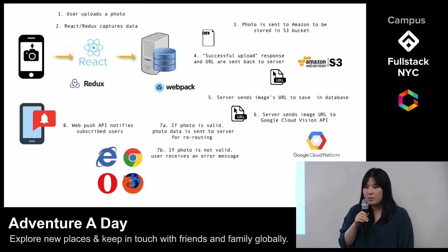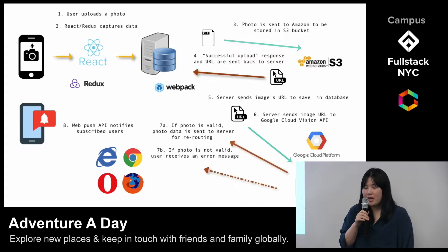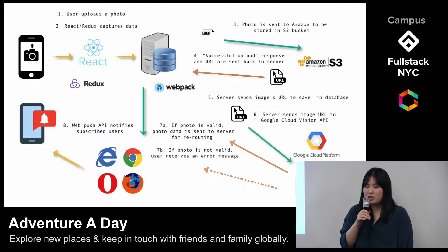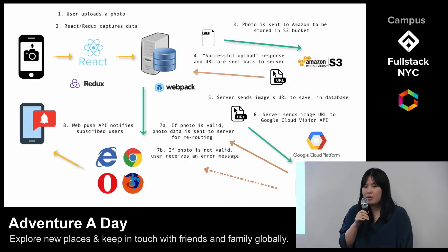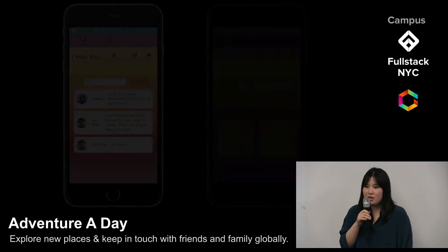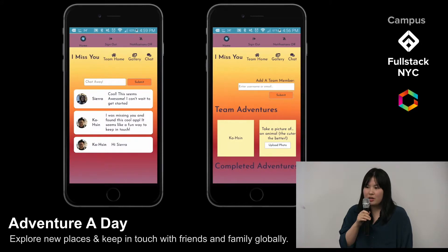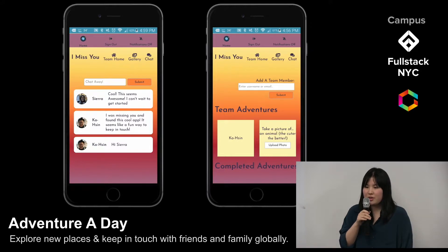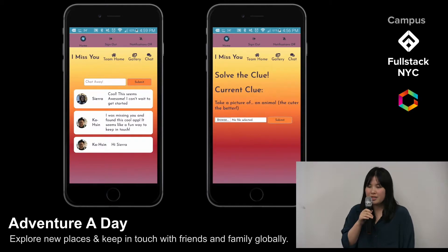Now let's see how users solve their daily adventures. When a user uploads a photo, it is sent to AWS and stored in an S3 bucket. We then send the S3-generated URL to Google Cloud Vision, which returns labels associated with the image, which we then compare to labels stored in our database. We decided to implement image verification through Google Cloud Vision in order to provide an added challenge for our users. On team home, users can view their team's adventures and solve their own individual adventure by clicking the upload photo button.